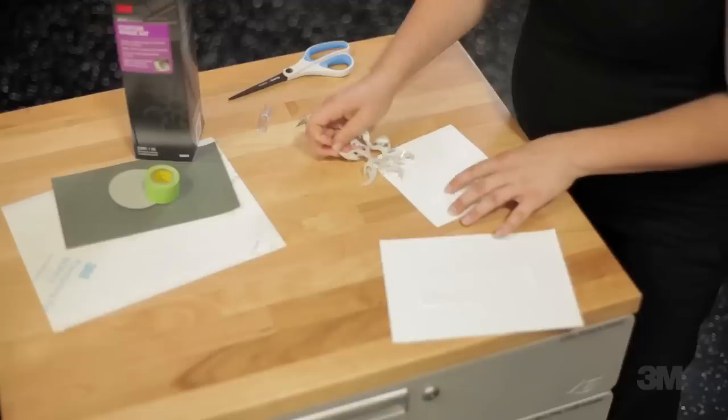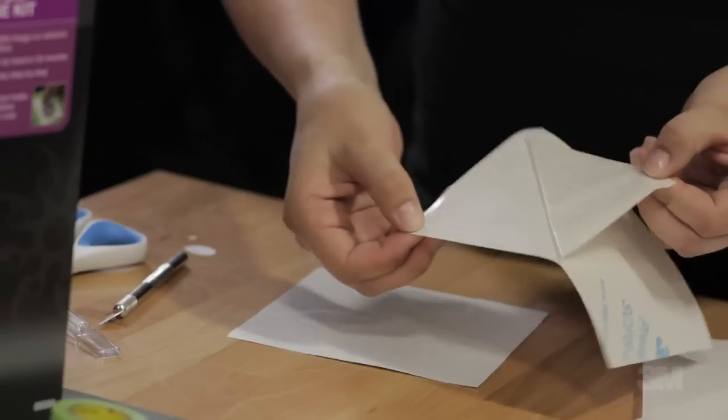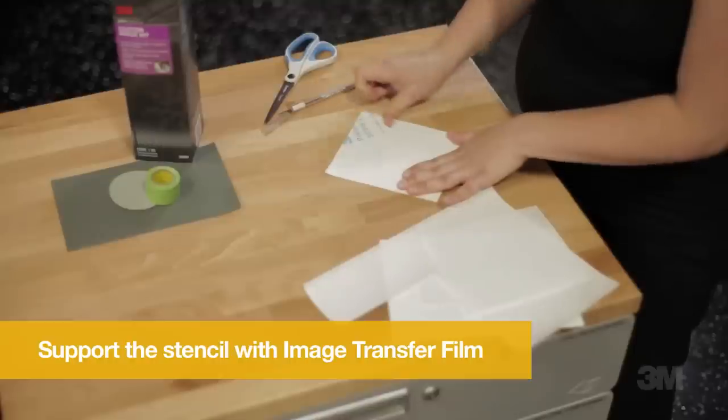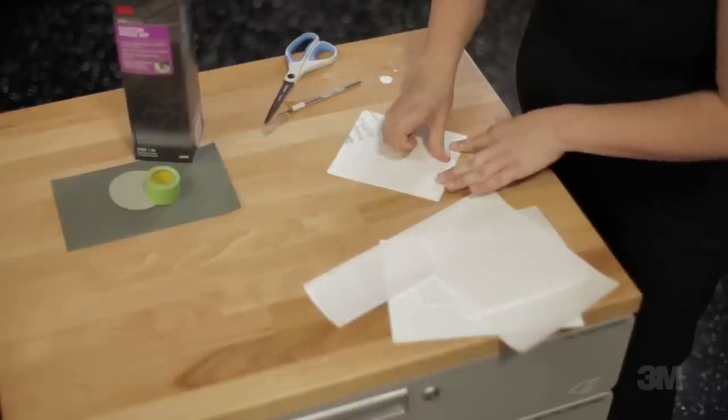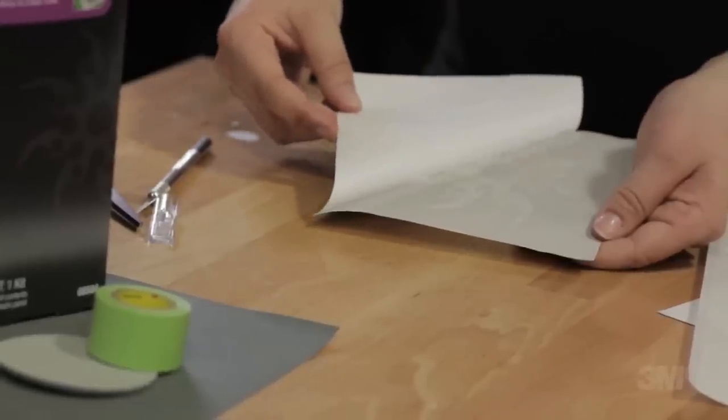You will now need to support the image stencil with the 3M Transfer Film. Remove the backing of the image transfer film and place it sticky side down over the top of your image. Remove the stencil film backing.